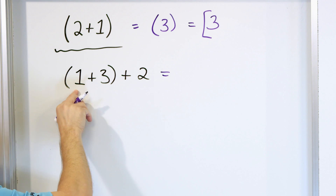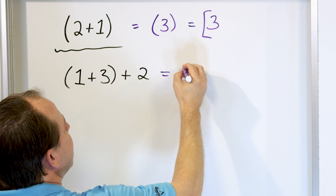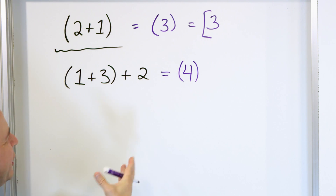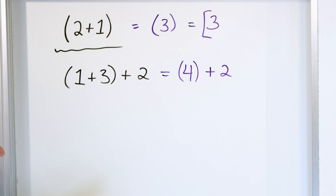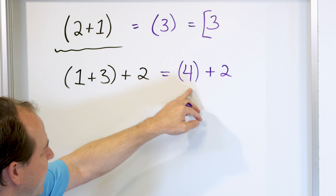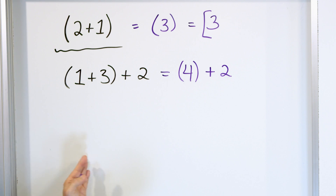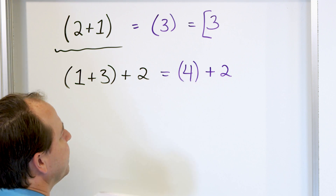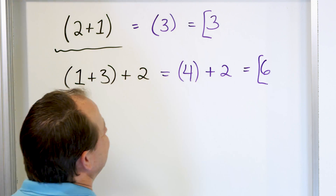We have one plus three inside the parentheses. One plus three is four. We can drop the parentheses at this point, and now we have four plus two on the outside. Mentally we drop the parentheses since they don't serve any purpose anymore. Four plus two is six, so the answer is six.